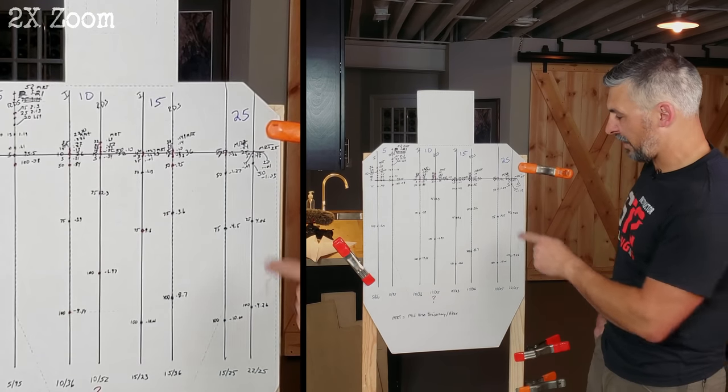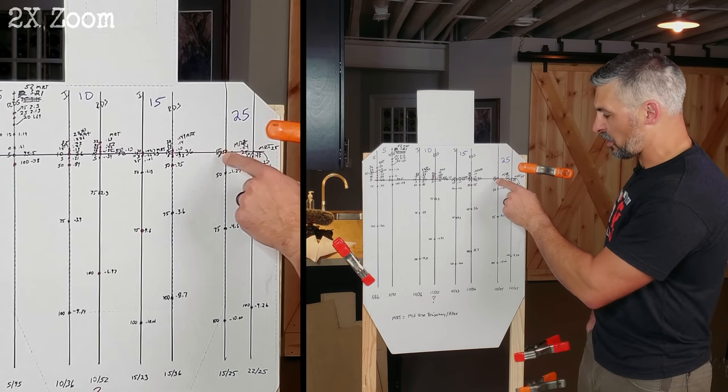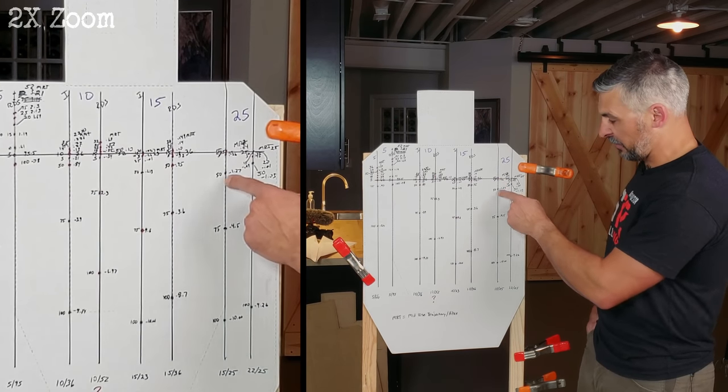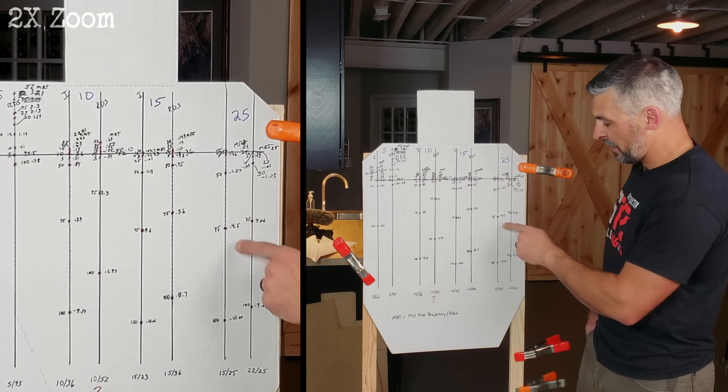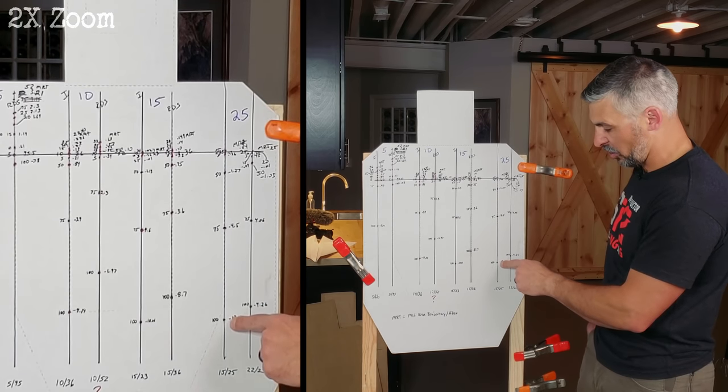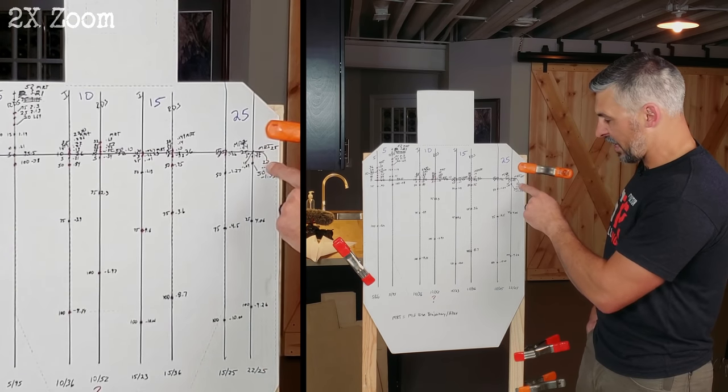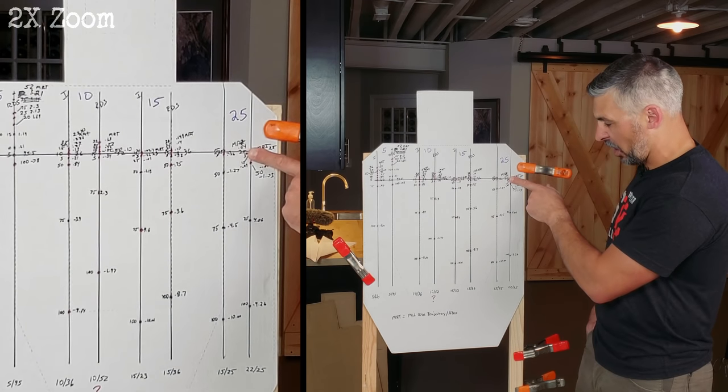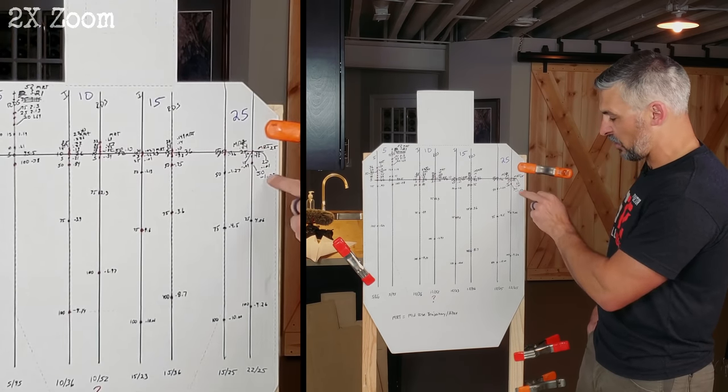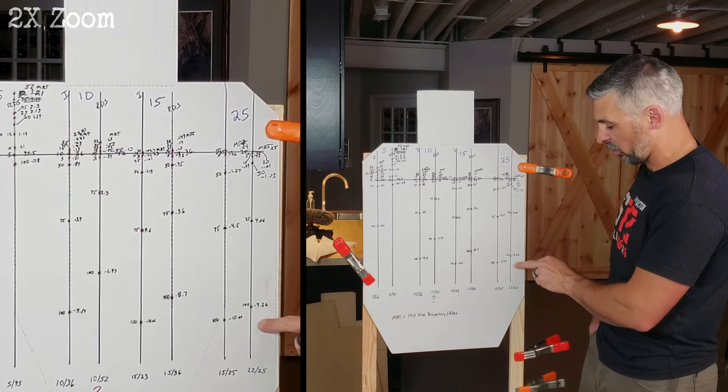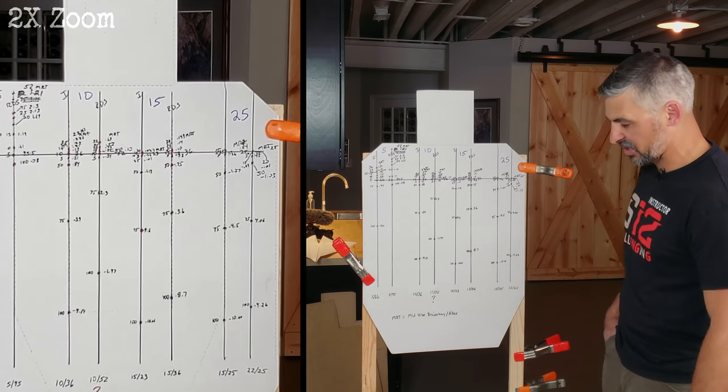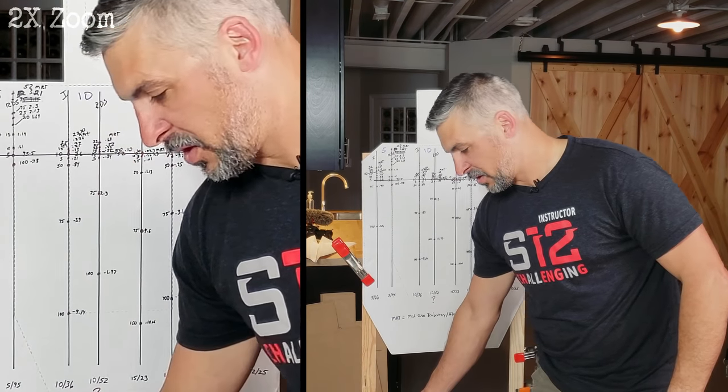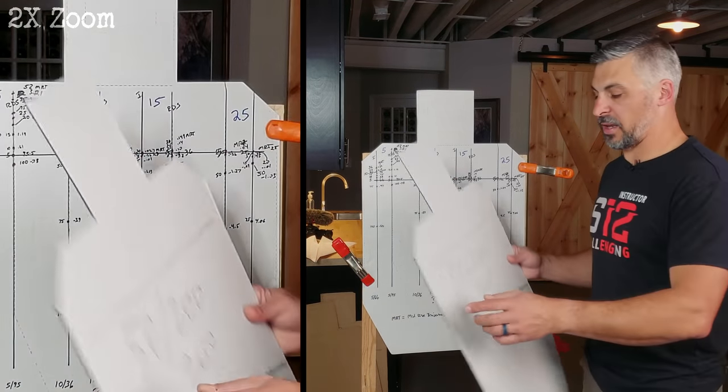Bump out to 25 yards. Five, ten, fifteen, twenty, twenty-five are all within about half of an inch. 50 drops us down 1.27, 75 four and a half, and a hundo ten. On the red dot, five, ten, fifteen, twenty, twenty-five, again I'm covering them with my finger. 50 we're an inch low, 75 four low, and a hundred 9.26.